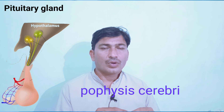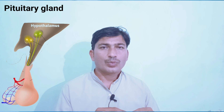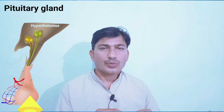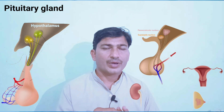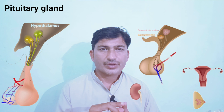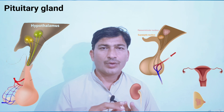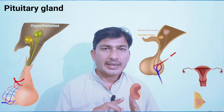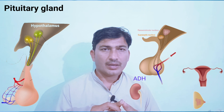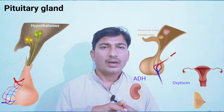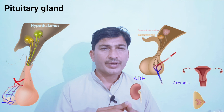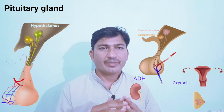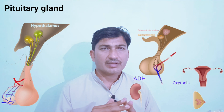The pituitary gland secretes its own hormones and also releases hormones of the hypothalamus. The posterior lobe of the pituitary gland releases two important hormones: number one is oxytocin, and number two is ADH, which stands for anti-diuretic hormone, also known as vasopressin. Anti-diuretic hormone retains water inside our body and keeps the balance of water inside our body.